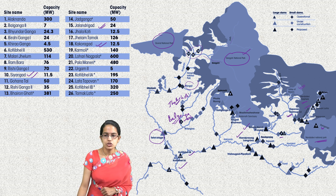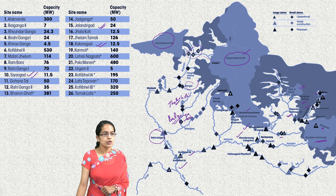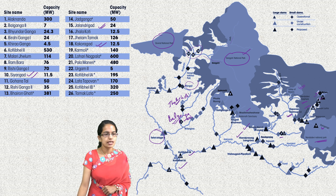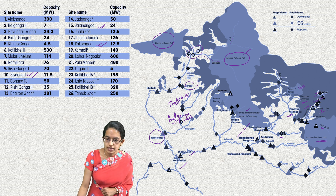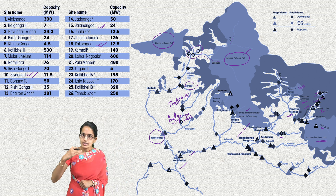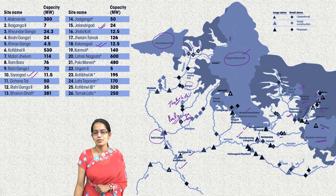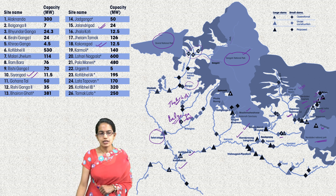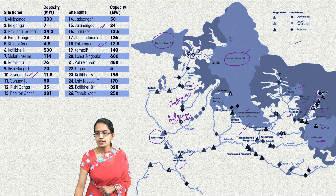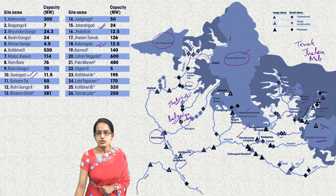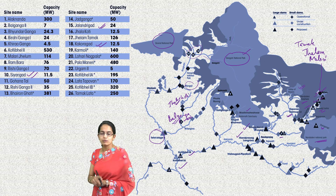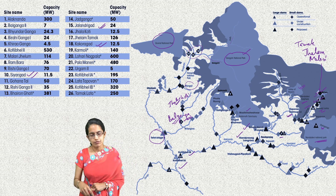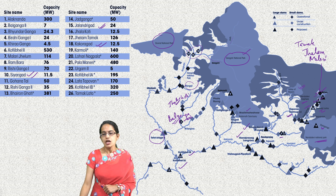On the Dhali Ganga, in the upstream of the Tapovan Vishnugat, we have the Malari project, the Malari Jhelam project, the Jhelam Tamak project, and the Tamak Lata project. The three key terms to remember for projects on the Dhali Ganga river are Tamak, Jhelam, and Malari. These are located in the upstream area of Dhali Ganga, while downstream we have the Tapovan Vishnugat.